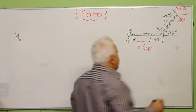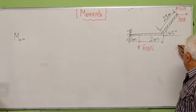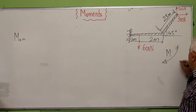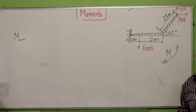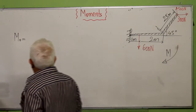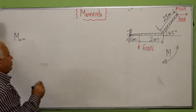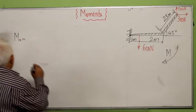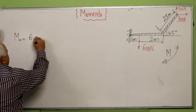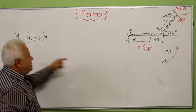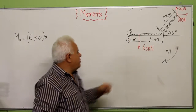If I choose my orientation of the moment as clockwise — it's arbitrary, I can choose any direction — I can start with the first force. For the first one, it will be force times distance. The force is 600 newtons, times the distance from the point O, which is 1 meter.